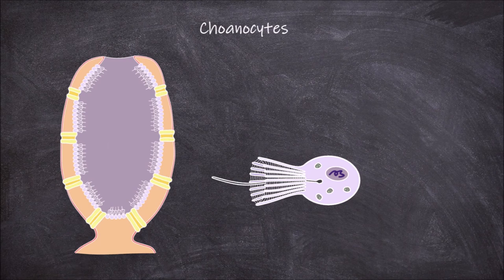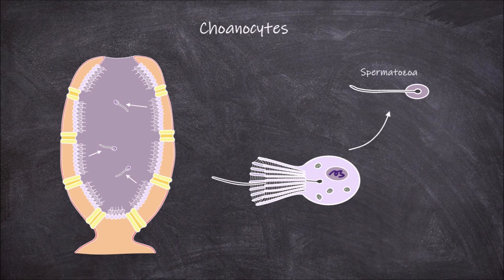Choanocytes can also differentiate to form the spermatozoa. The spermatozoa are also known as the sperm or male gamete and are used during sexual reproduction in sponges.